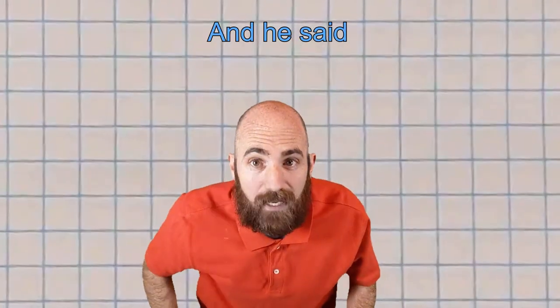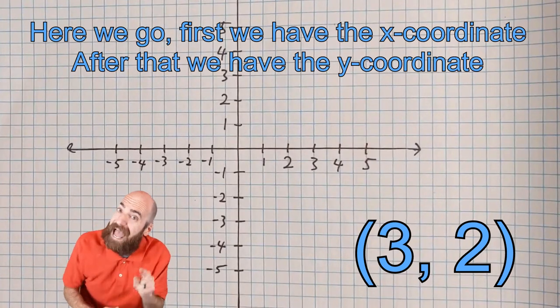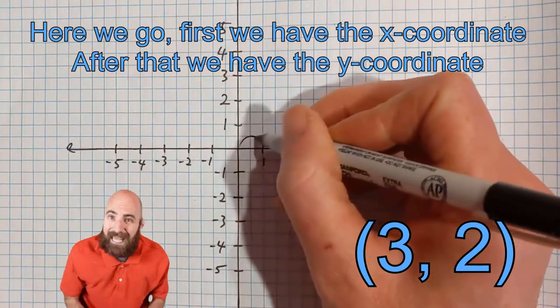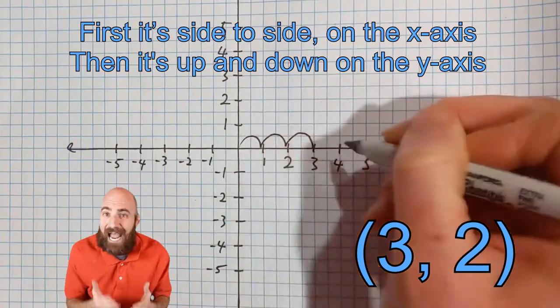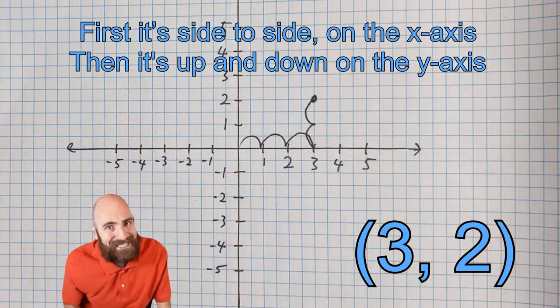And he said, here we go. First we have the X coordinate. After that we have the Y coordinate. First it's side to side on the X axis. Then it's up and down on the Y axis.